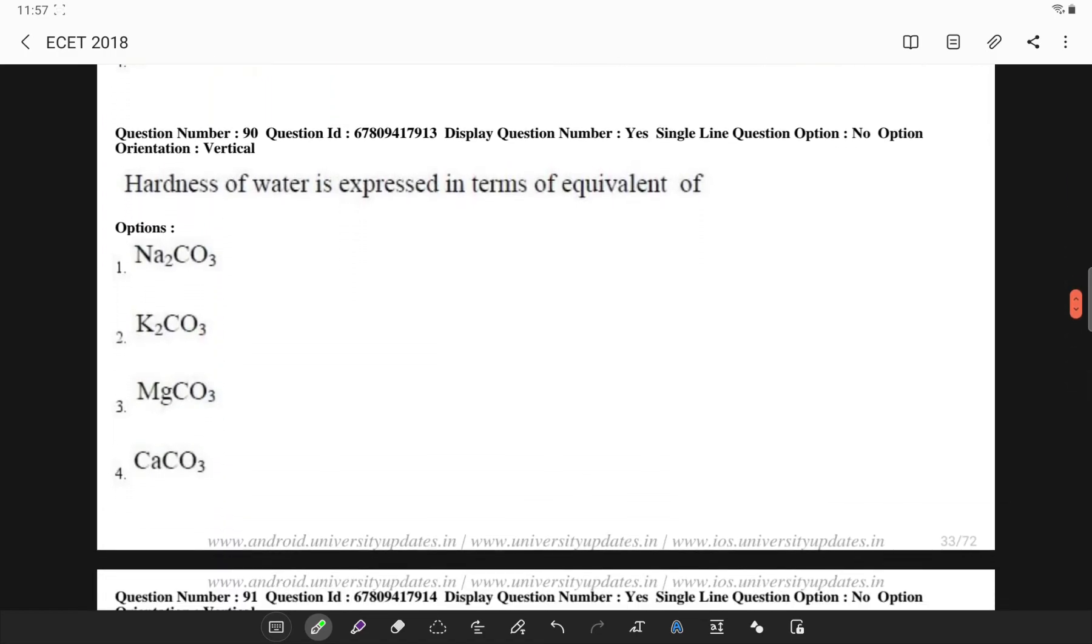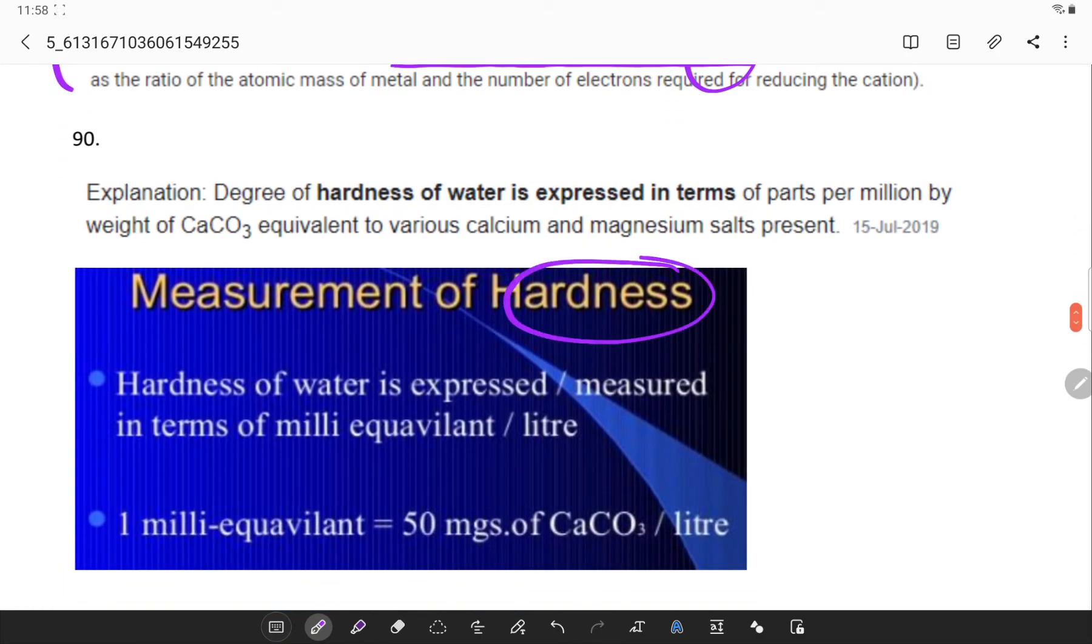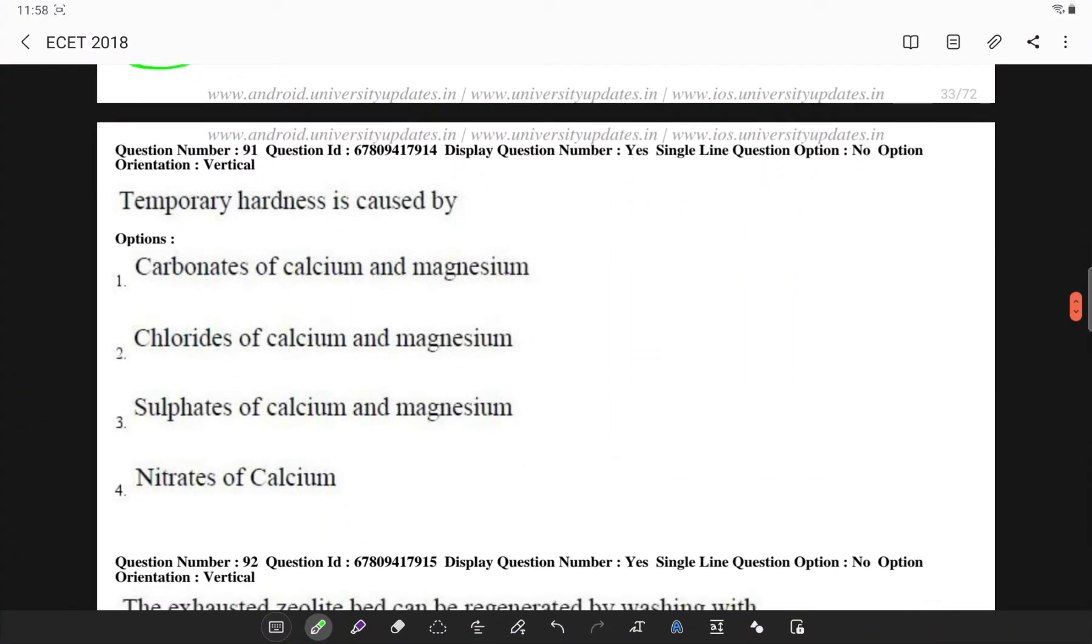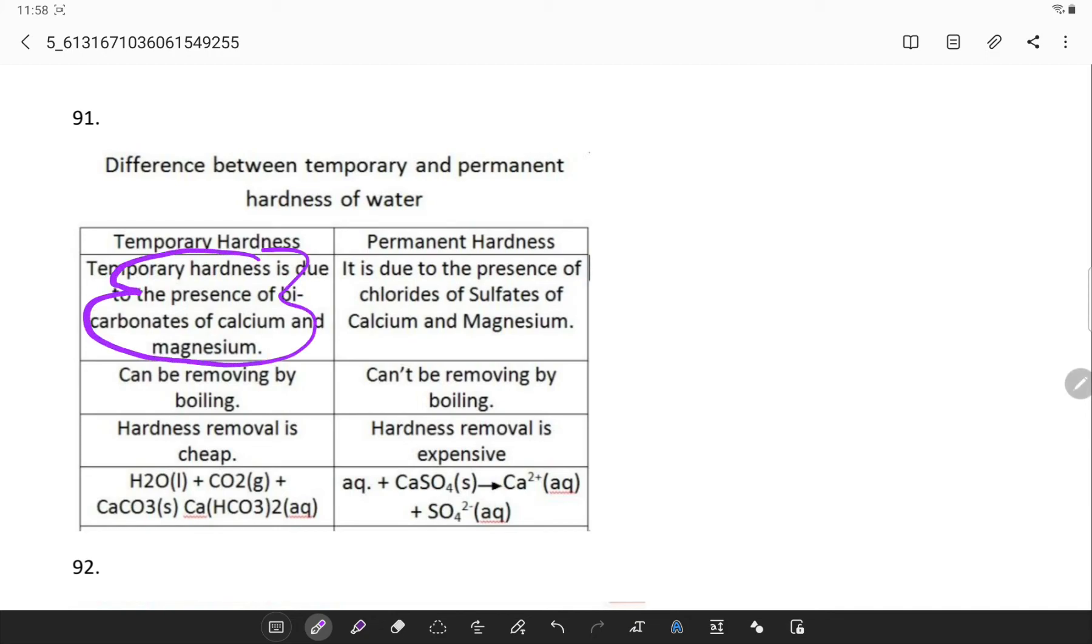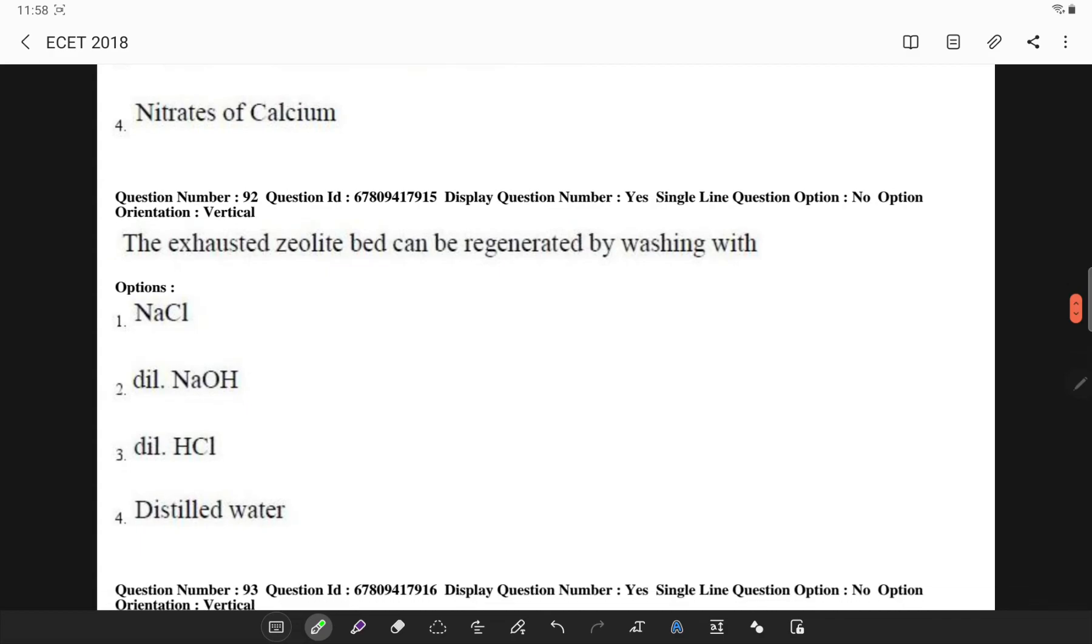Hardness of water is generally expressed in parts per million in terms of calcium carbonate. Measurement of hardness is done in terms of calcium and magnesium. Temporary hardness is basically due to the carbonates and bicarbonates of calcium, whereas sulfates and chlorides will definitely cause permanent hardness. This can be removed by boiling. However permanent cannot be removed by boiling. So it is cheaper process vs expensive process.